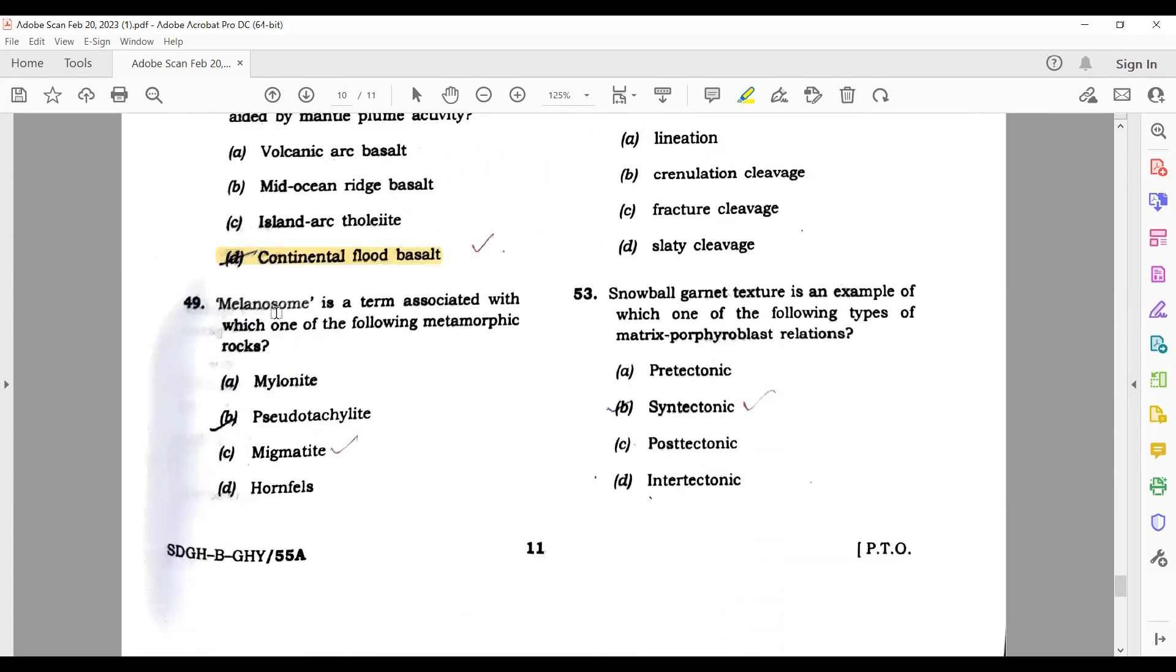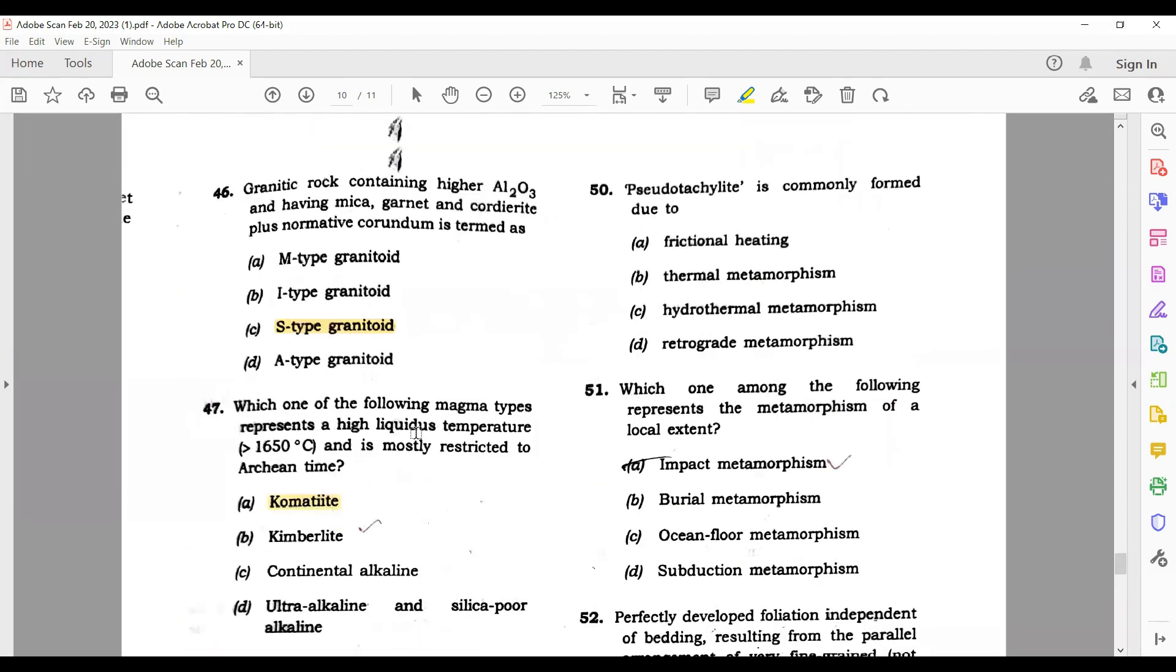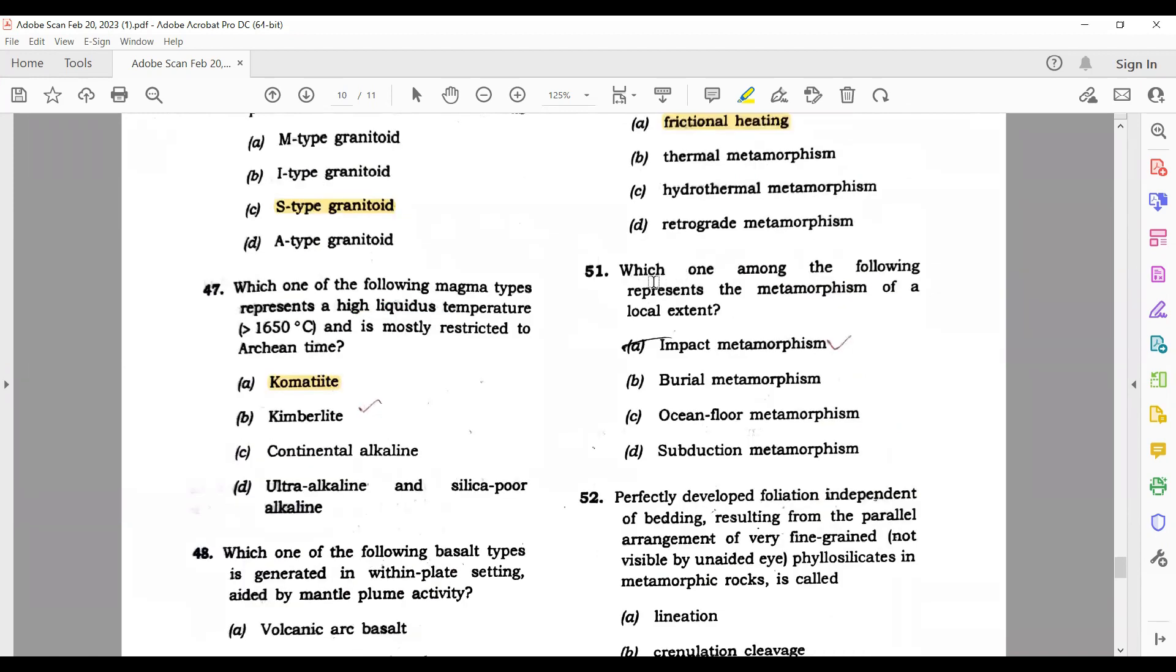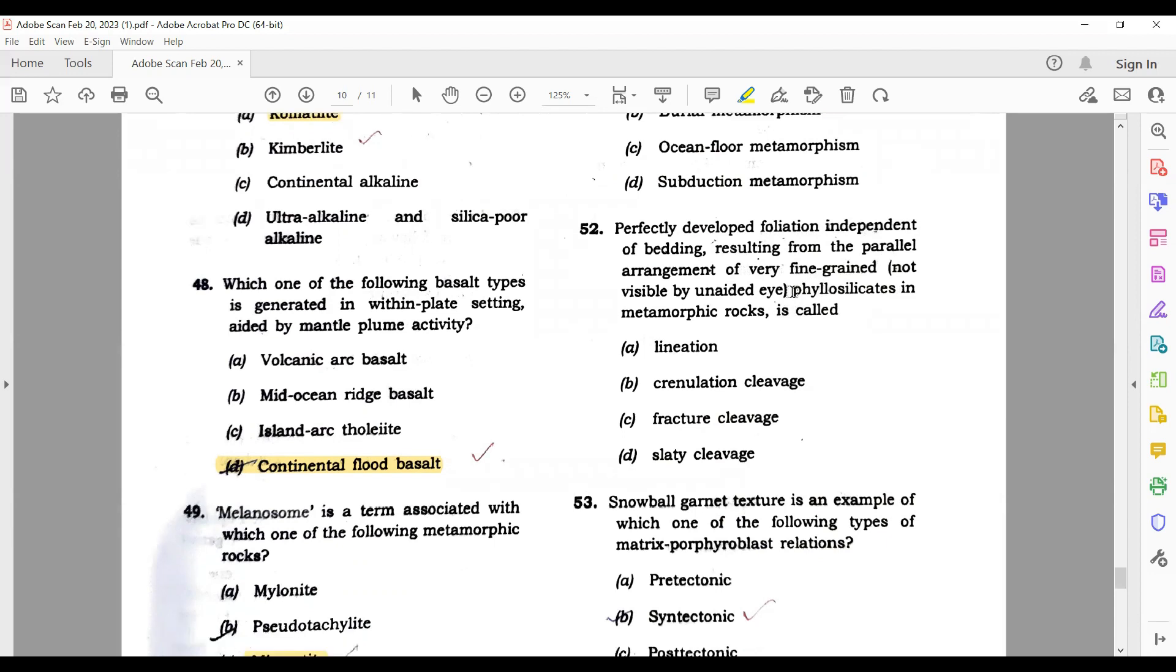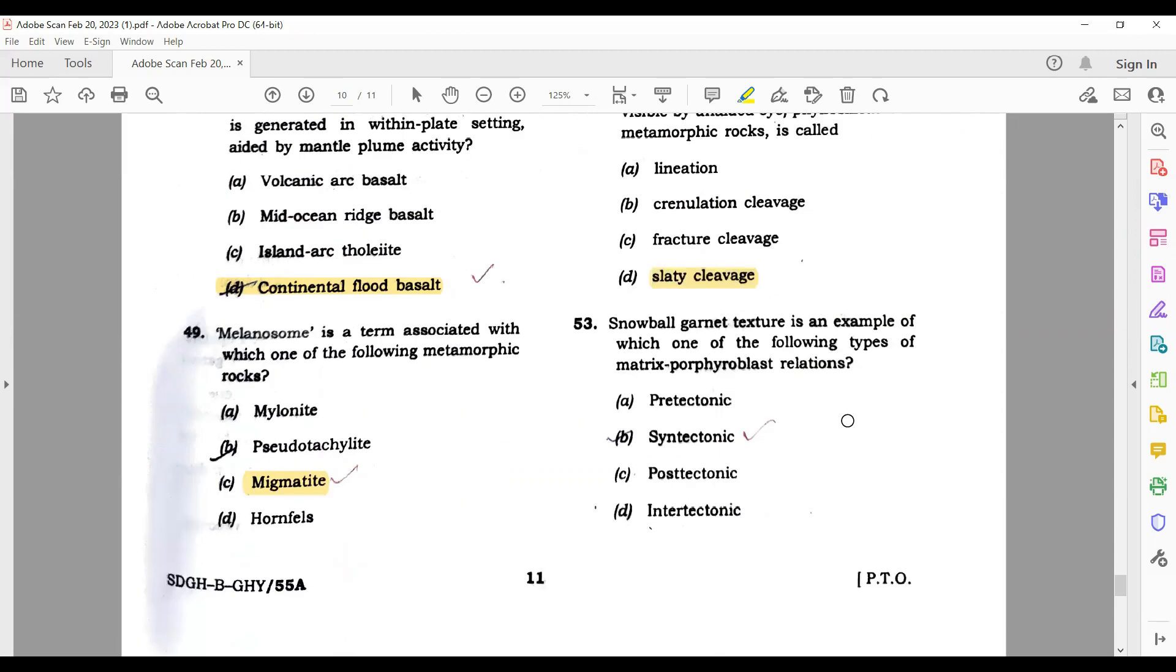Next, granitic rock containing higher Al₂O₃ and having mica, garnet and cordierite plus or minus corundum is termed as S-type granite. Which one of the following magma types represent a high liquidus temperature? Again komatiite is the right answer. Which one of the following basalt types is generated in within plate settings aided by mantle plume activity? Its answer is continental flood basalt. Melasosome - this question came in GATE - its answer is migmatite. Pseudotachylite is commonly formed by frictional heating.